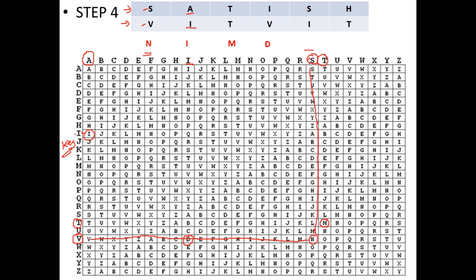Now take S from the plaintext and I from the key. S is here and I is here. The intersection of S and I is A, so the ciphertext is A. For H and T: H is here in the plaintext, T is here in the key, and their intersection is A. Remember: characters across the top are for plaintext, characters on the left are for the key, and values inside the table are the ciphertext output.